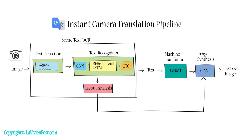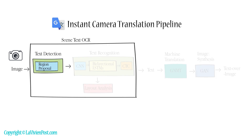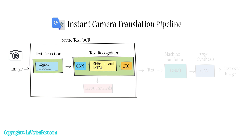The instant camera translation allows you to point the camera at documents or public signs and translate them. The pipeline includes OCR, machine translation, and image synthesis. Text detection uses a region proposal network to extract text in the image and place bounding boxes around it. Text recognition then uses NLP-based networks and CTC to convert the extracted information into meaningful sentences.